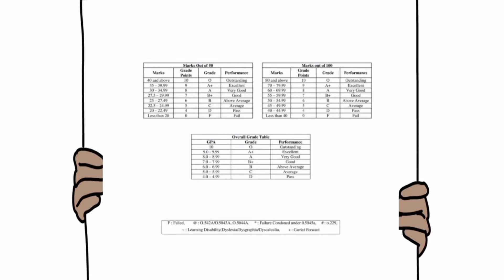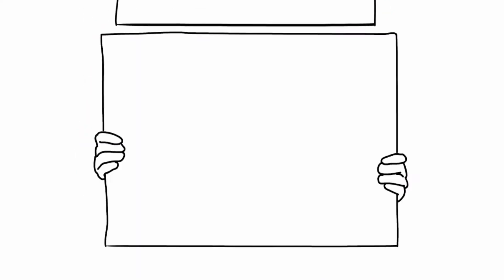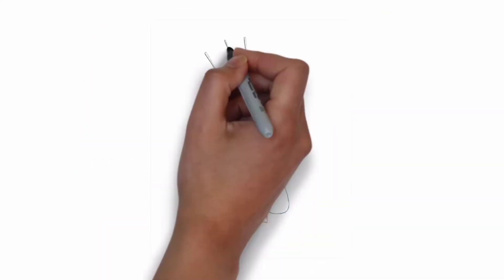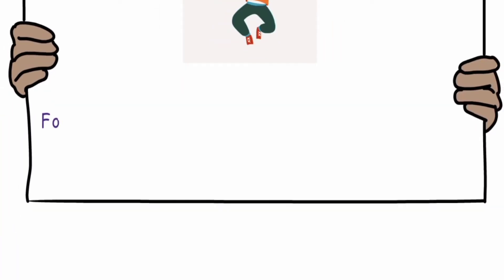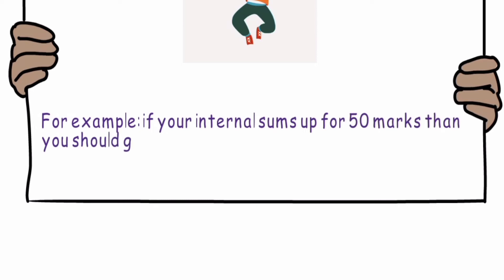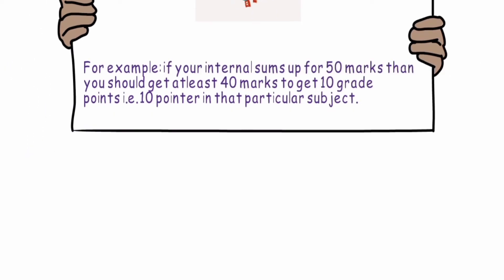classification is given behind the mark sheet you get from the university. Also we have mentioned it here. For internals, if you get 80 percent or above, then you get 10 grade points. For example, if your internal sums up for 50 marks, then you should at least get 40 marks to get 10 grade points, that is 10 pointer in that particular subject.